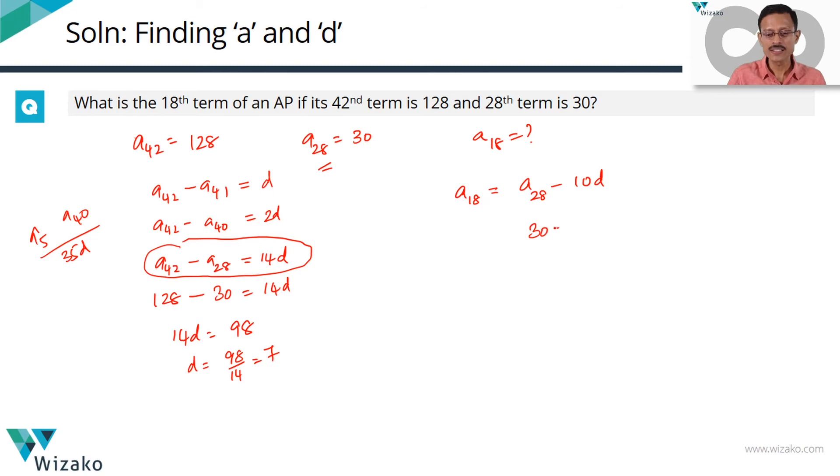The 28th term is 30. The common difference is equal to 7. 30 minus 10 into 7 will give us a value of the 18th term. 30 minus 70 is minus 40, which is the answer.